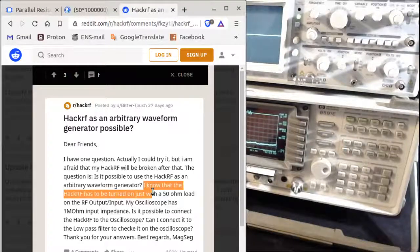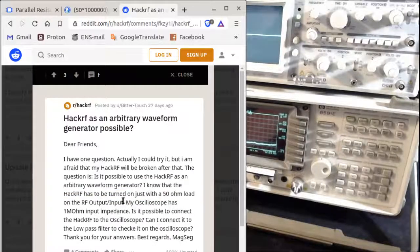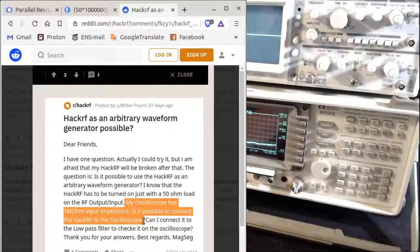Specifically, he says: I know that the HackRF has to be turned on with a 50 ohm load. The problem is that my oscilloscope has 1 megaohm input impedance. Is it possible to connect the HackRF to the oscilloscope without damaging it?